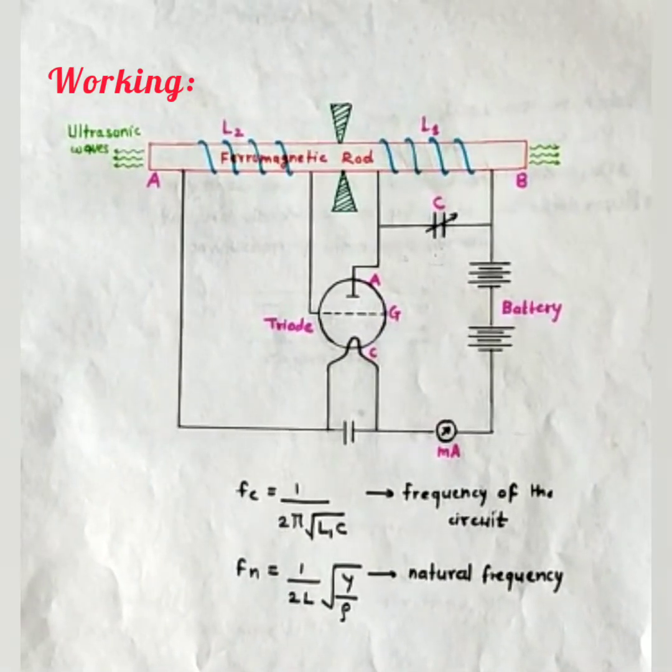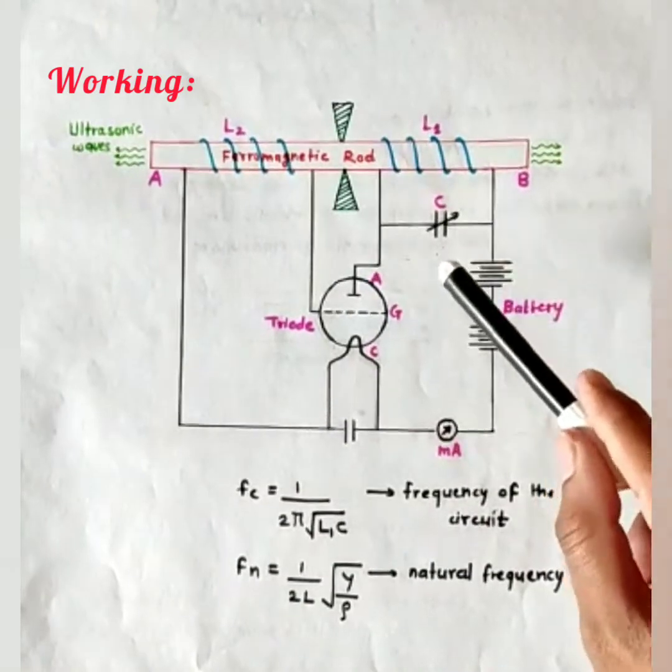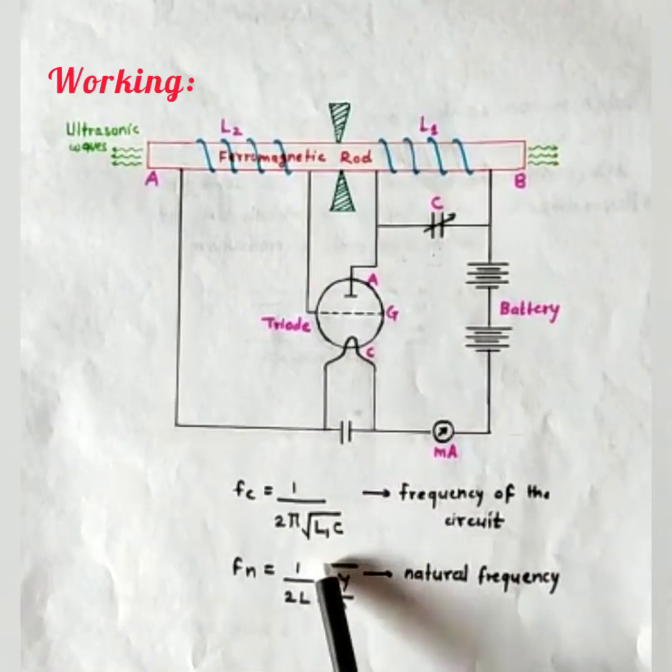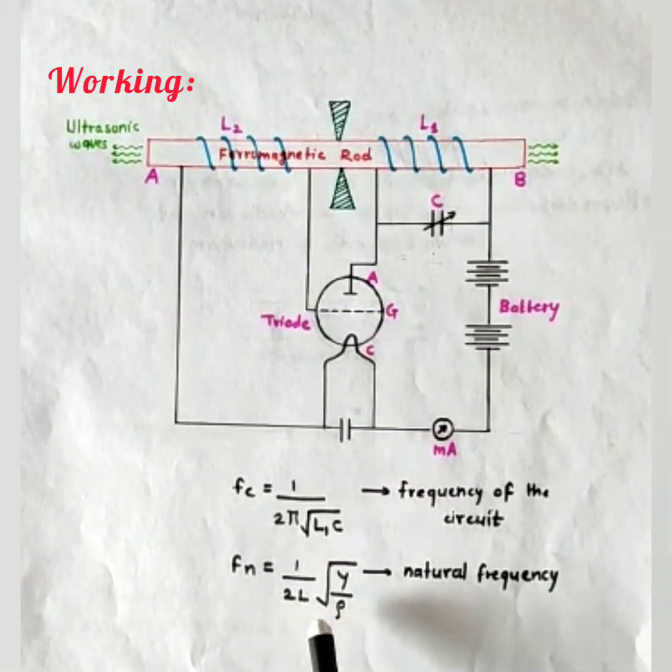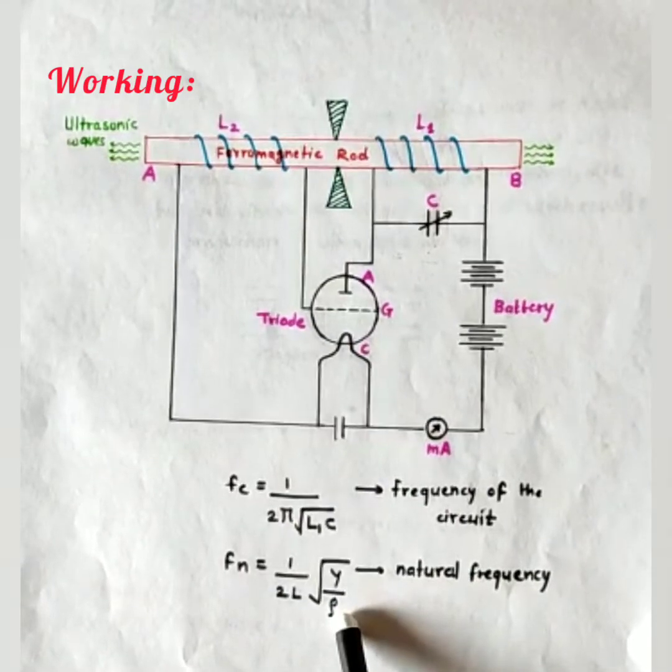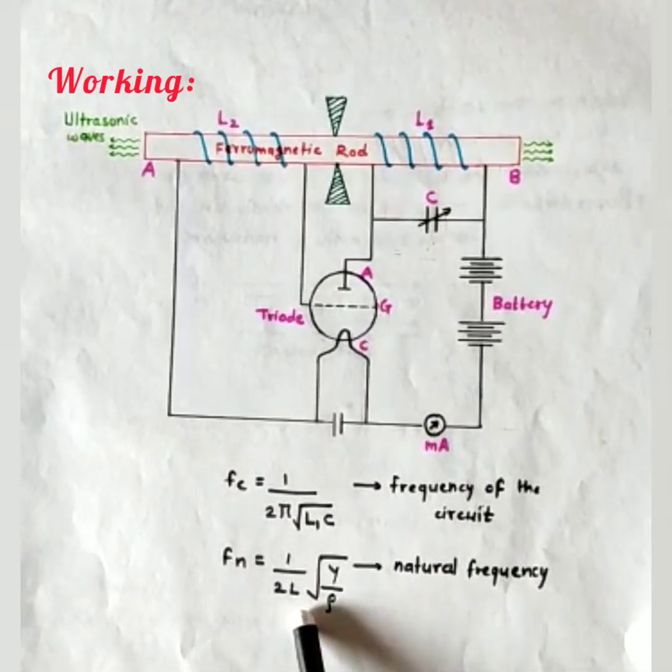Hence, on changing the frequency of the capacitor to the natural frequency which is given by Fn equals to 1 by 2L under root Y by ρ, where Y is the Young's modulus and ρ is the density of the rod and L is the length of the rod.